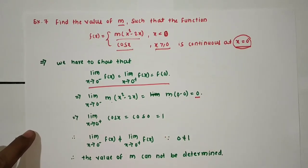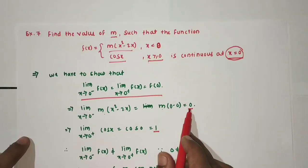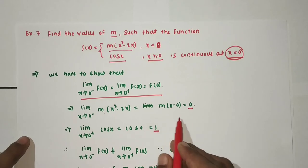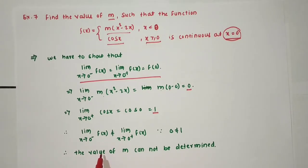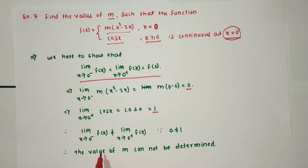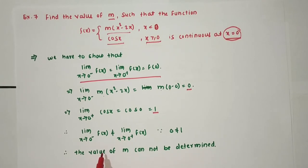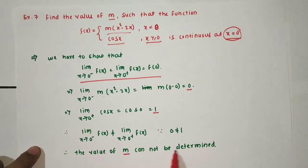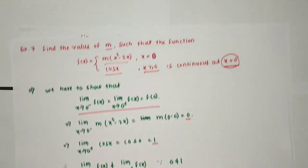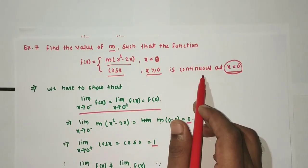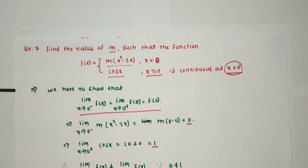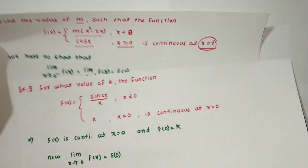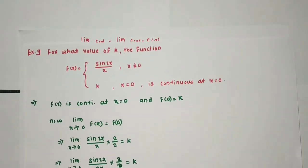For right hand limit: limit as x→0+ of cosx = cos(0) = 1. Since left hand limit = 0 ≠ 1 = right hand limit, the limit of f(x) at x = 0 does not exist. If the limit doesn't exist at a point, we cannot check continuity there. Hence the value of m cannot be determined, because no value of m can make this function continuous at x = 0.